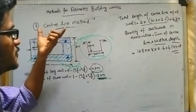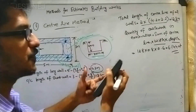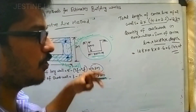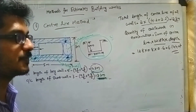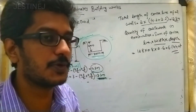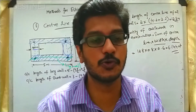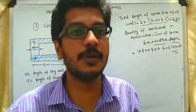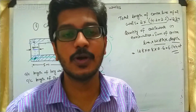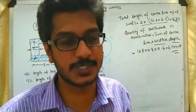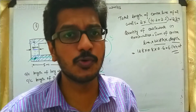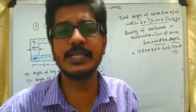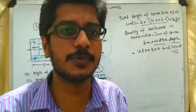The center line method is very easy to solve. If a question specifies you must use the center line method, use it; if it specifies the long wall and short wall method, then use that. Otherwise, the center line method is clearly much simpler for this type of question. I hope the section is clear. Thank you very much.